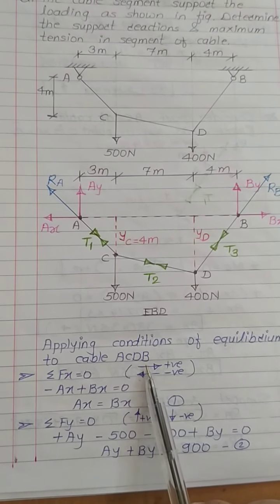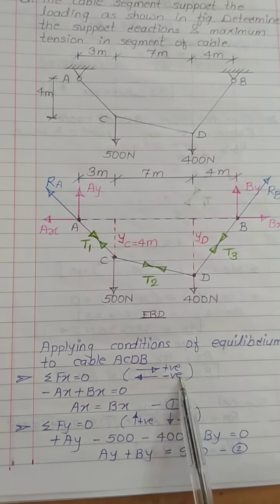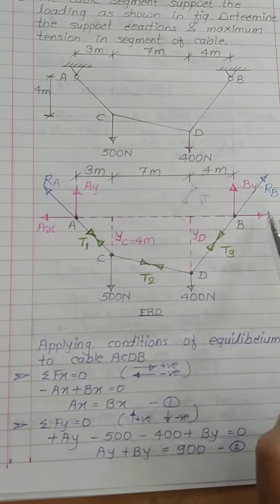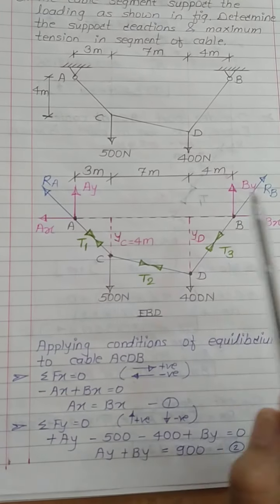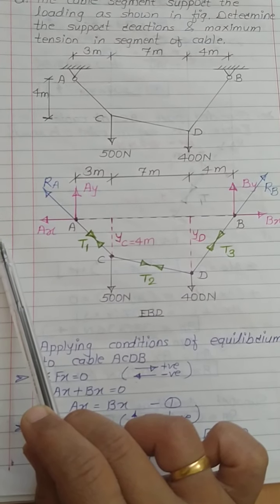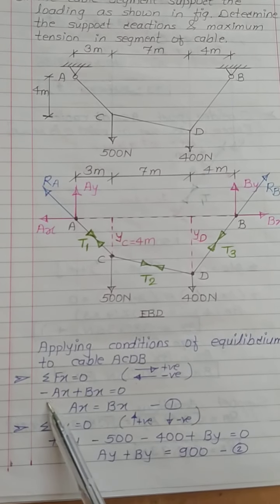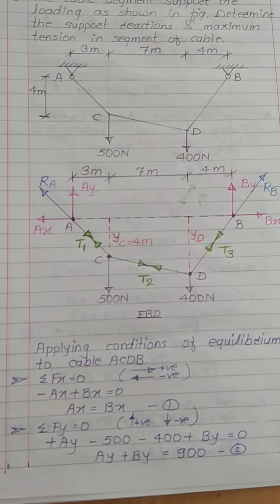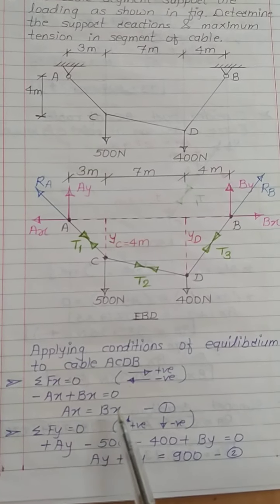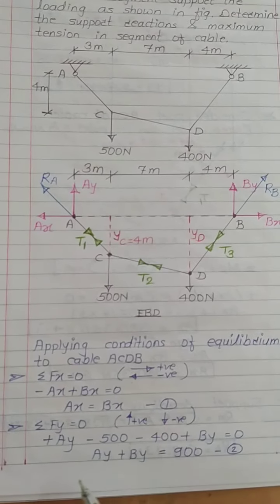Applying the first equilibrium condition ΣFx = 0 with sign convention: forces to the right are positive, forces to the left are negative. Observing the free body diagram, the only horizontal forces are Ax and Bx. Ax acts leftward (negative) and Bx acts rightward (positive), so: −Ax + Bx = 0, giving us Ax = Bx. This is equation number one.